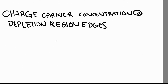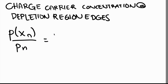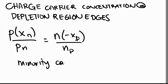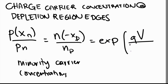Similarly, we can also get the charge carrier concentration at our depletion region edges. These would be related to our applied voltage. We can get the minority carrier concentrations at the depletion region edges — Pxn, P(−xp), and their counterparts — and these will be equal to their equilibrium values multiplied by exponential of Q·V over k_B·T.